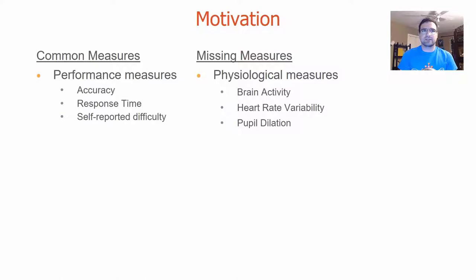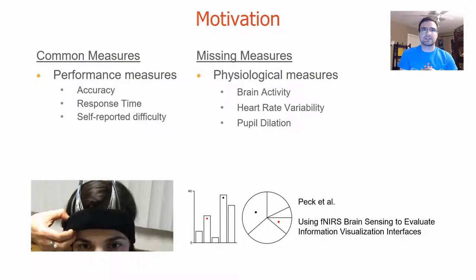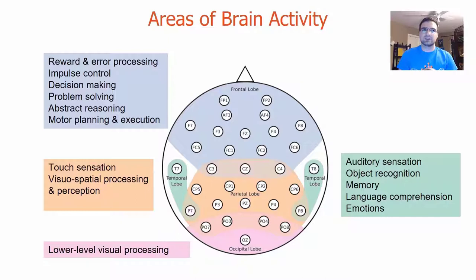To our knowledge, physiological measures have been rarely used to evaluate data visualizations, such as the study by Anderson et al that measured cognitive load in participants when identifying the larger interquartile range on different types of box plots. Another example is the study conducted by Peck et al, which compares the task difficulty of estimating differences between two highlighted sections in bar charts versus pie charts. However, none has been used to evaluate network visualizations.